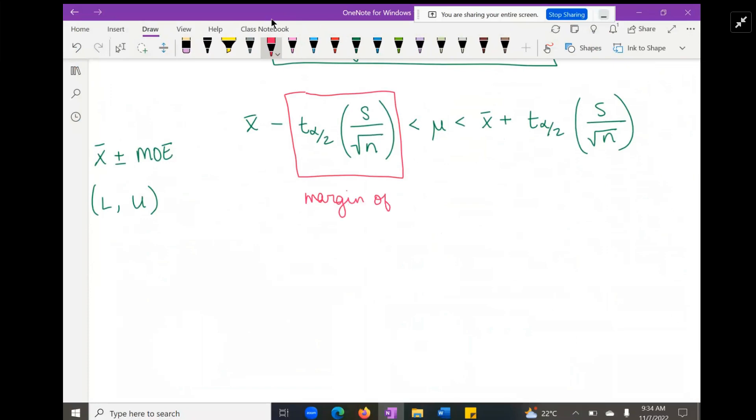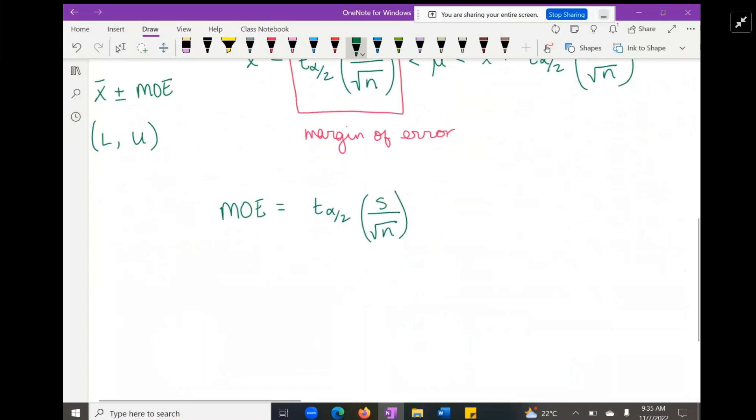We're going to laser focus on this part of the formula: the margin of error. This is all we need to find the margin of error. Depending on your class, you may use the symbol E, capital E, or you may have it spelled out MOE, or some other symbol. Whatever you use for the class, use that, but just know this is the formula.